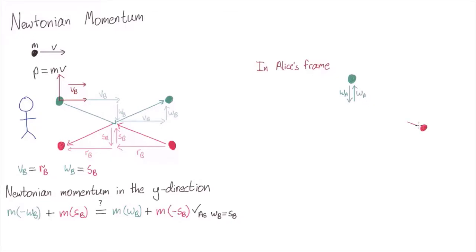Meanwhile, the pink ball comes flying towards Alice. Its horizontal and vertical components are R and S, now measured in Alice's frame. After the collision, it bounces off and flies back.